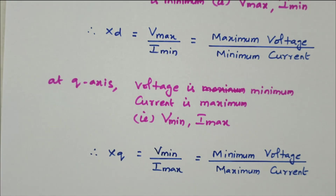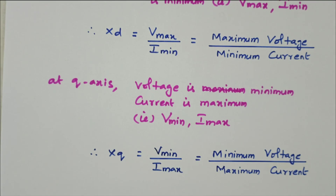In this video we discussed how to find the Xd and Xq parameters using the slip test of the alternator. The circuit consists of a three-phase alternator connected to three-phase supply through a three-phase variac with the field winding kept open, coupled with a DC motor. The DC motor is first rotated to rated (synchronous) speed. Then three-phase supply is given through the variac. Using maximum voltage and minimum current we find Xd (d-axis alignment), and using minimum voltage and maximum current we find Xq (q-axis alignment).